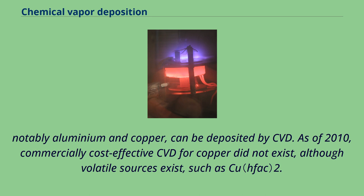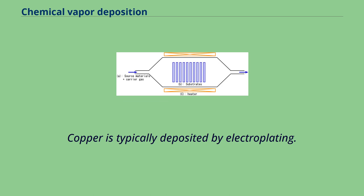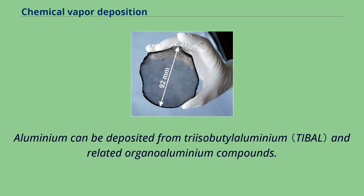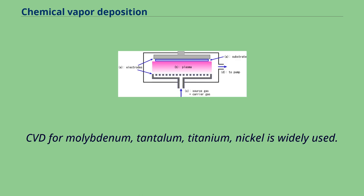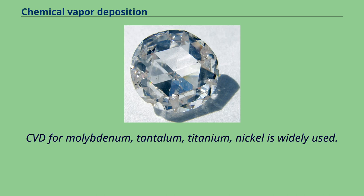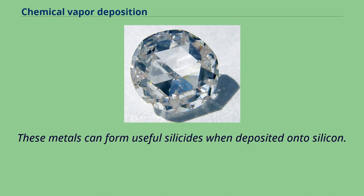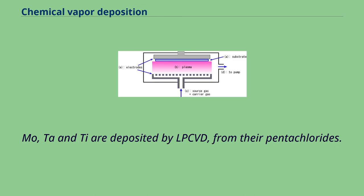Aluminium can be deposited from triisobutylaluminium and related organoaluminium compounds. CVD for molybdenum, tantalum, titanium, and nickel is widely used. These metals can form useful silicides when deposited onto silicon. Mo, Ta, and Ti are deposited by LPCVD from their pentachlorides. Nickel, molybdenum, and tungsten can be deposited at low temperatures from their carbonyl precursors.